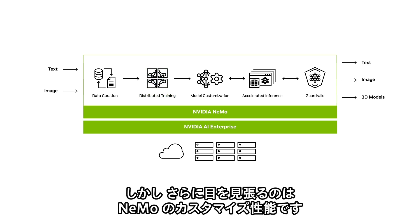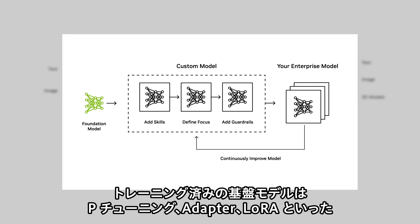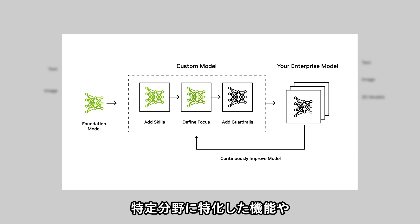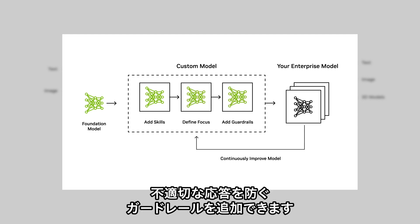But the real magic happens when you unleash NEMO's power for customization. Once you've trained your foundation models, you can use various techniques like P-tuning, adapters, and low-rank adaptation of large language models to easily customize them for various tasks. You can add functional skills to focus on user domain and add guardrails to prevent inappropriate responses.